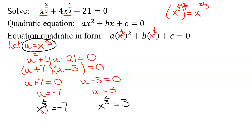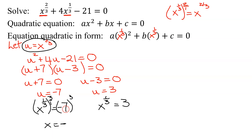Remember, the one-third exponent represents a cube root. To undo that, you cube both sides. For the first equation, cubing both sides: x raised to the one-third raised to the third power — you multiply the exponents to get 3 over 3, which is 1. So x equals negative 7 cubed. Three negatives multiplied together give a negative: 7 times 7 is 49, times 7 is 343. For the second equation, x to the one-third equals 3, cube both sides, and you get x equals 3 cubed equals 27.